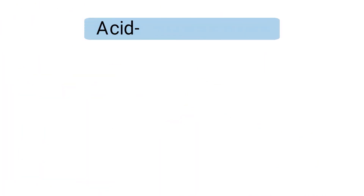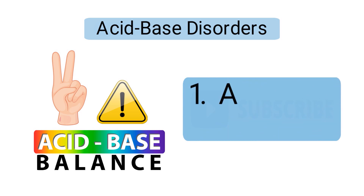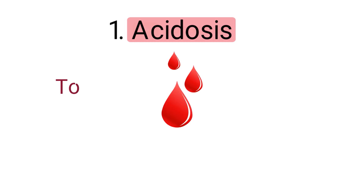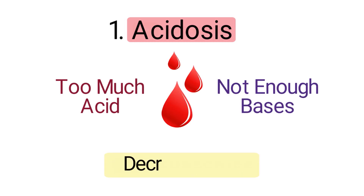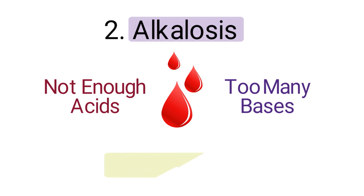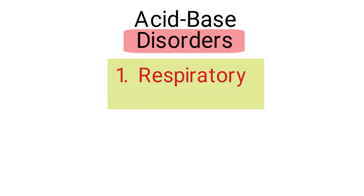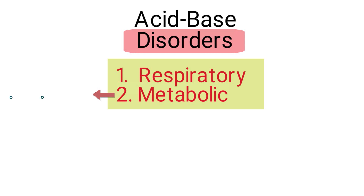There are two types of abnormalities when it comes to maintaining acid-base balance: acidosis and alkalosis. Acidosis means the blood has either too much acid or not enough bases, which results in a decreased pH. Alkalosis means the blood has too many bases or not enough acids, which results in an increased pH. The two types of acid-base disorders include respiratory and metabolic.